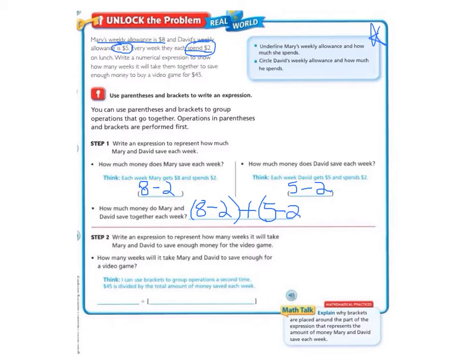Then step two says, write an expression to represent how many weeks it will take Mary and David to save enough money for the video game. How many weeks will it take Mary and David to save enough for a video game? Let's look at the little blue letters there. It says, I can use brackets to group operations a second time. 45 is divided by the total amount of money saved each week.